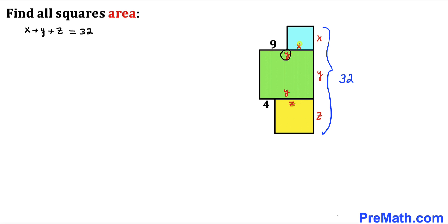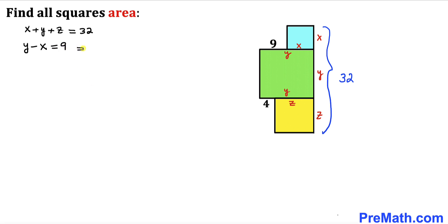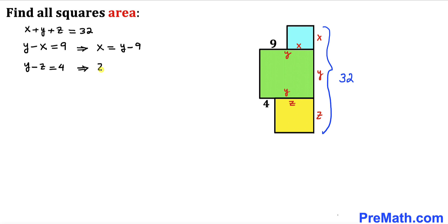Looking at the diagram, we can see that y minus x equals 9, so x equals y minus 9. Likewise, the difference between y and z gives us 4, so y minus z equals 4, meaning z equals y minus 4.